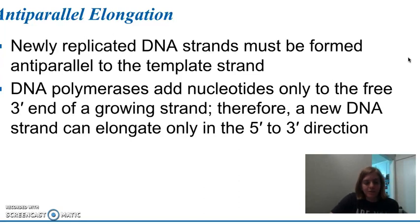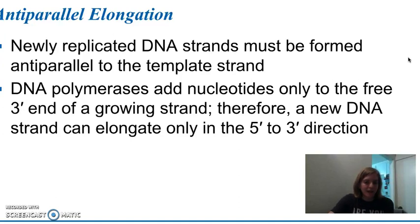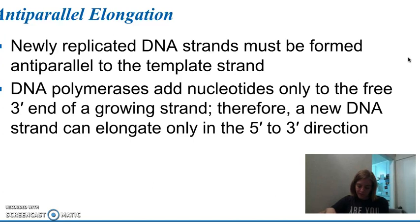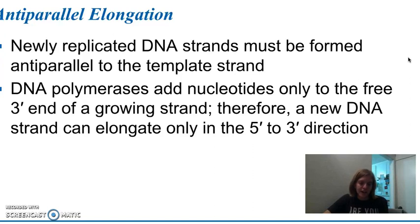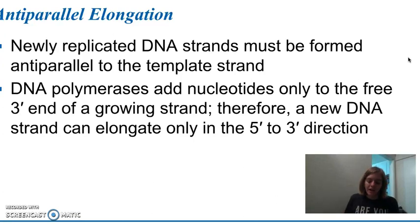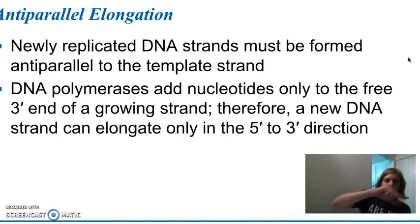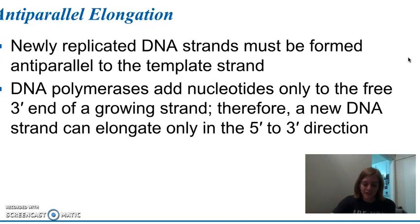One important thing to note is that the newly replicated DNA strands are formed in an anti-parallel way to the template strand. The two strands of DNA run in opposite directions. DNA polymerase adds nucleotides only to the free three prime end of the growing strand — it can't add anything to the five prime end. You can think of the strands as running in one direction like a one-way street, and the anti-parallelness acts like a divider, so you can't go in the opposite direction. This plays a role in the way the DNA is replicated.